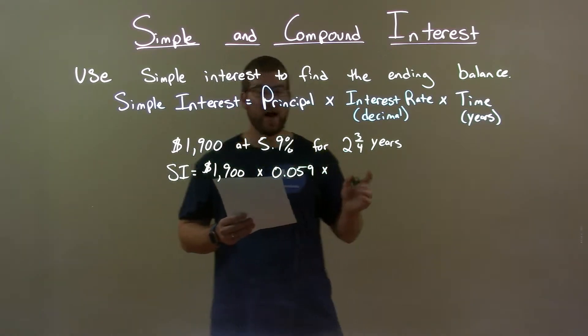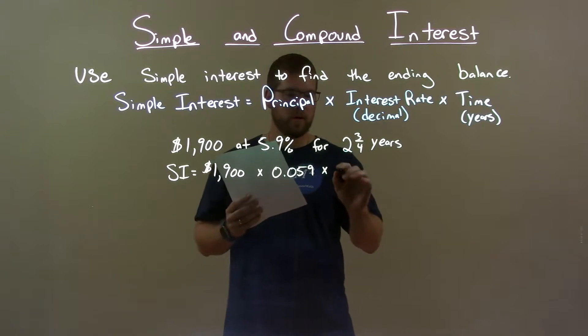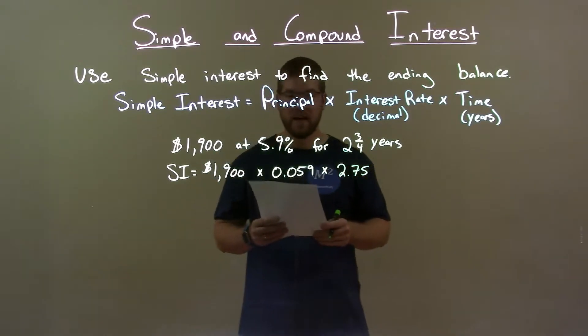For the number of time in years, two and three quarters is 2.75 as a decimal.